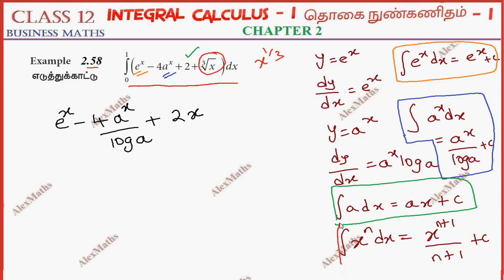So in the formula, last formula x power n, x power n plus 1 by n plus 1, that's what we know. x power 1 by 3 plus 1, by 1 by 3 plus 1, full square bracket.